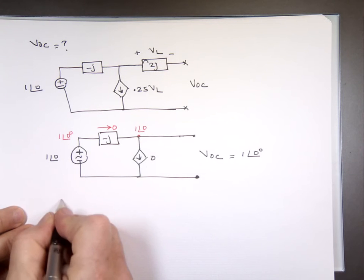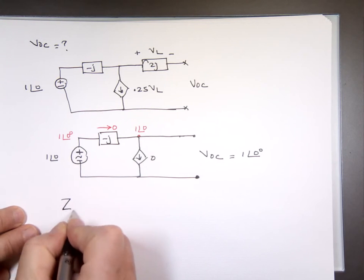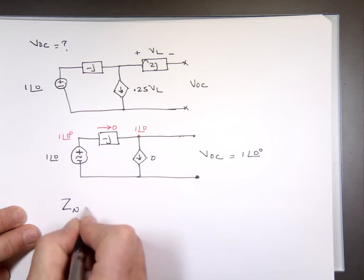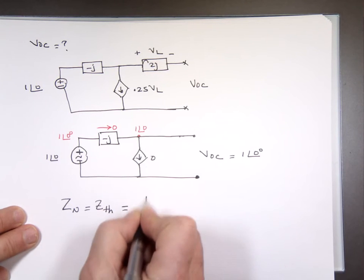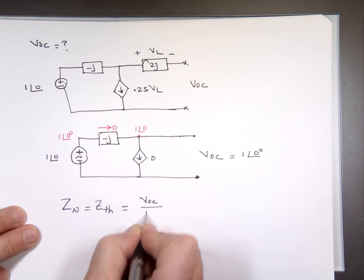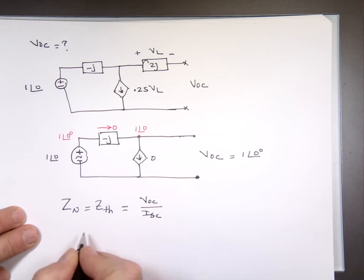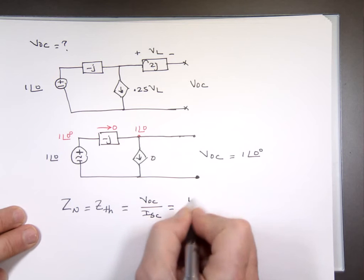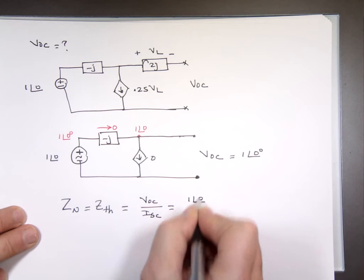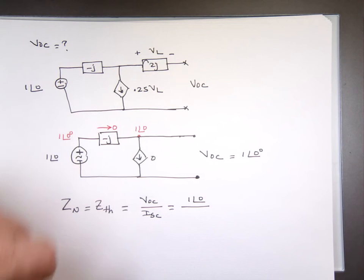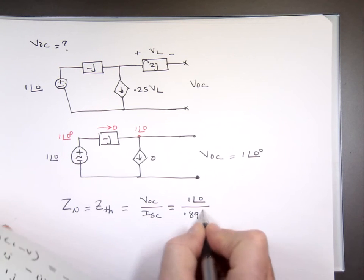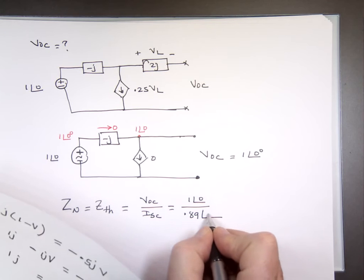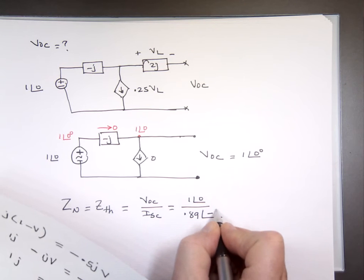Z_Thevenin, which is the same as Z_Norton, equals V_open_circuit over I_short_circuit. V_open_circuit is 1∠0, and I_short_circuit is 0.89∠−63.4.